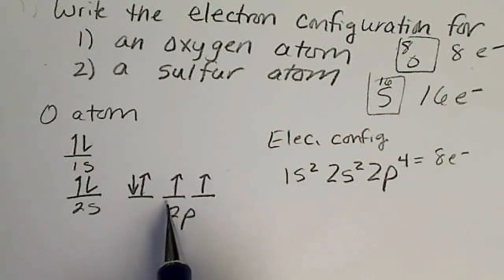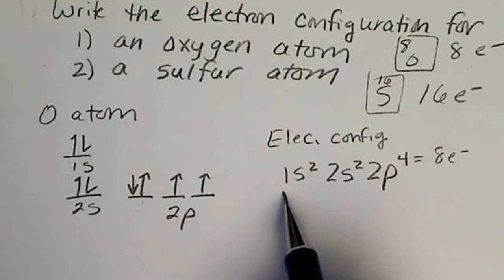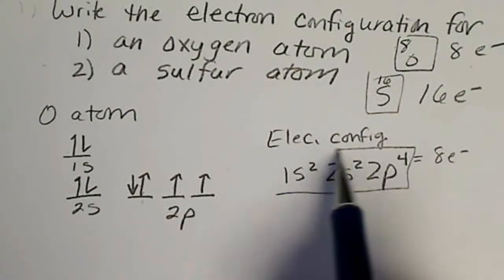The orbital diagram is like the blueprint that shows where the electrons are, and the electron configuration is more like the address.